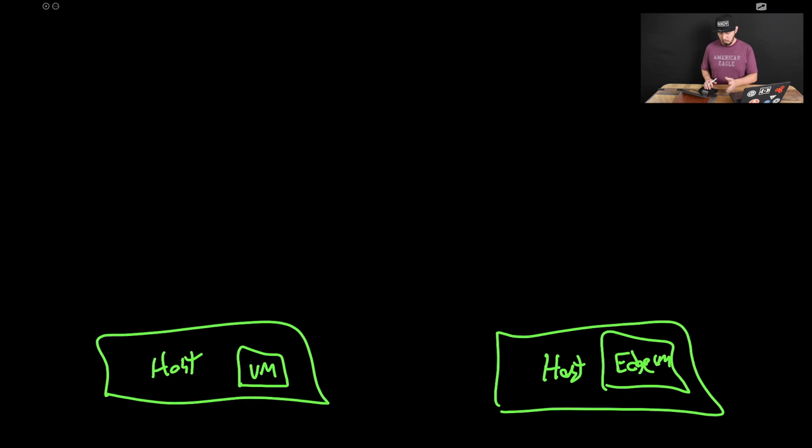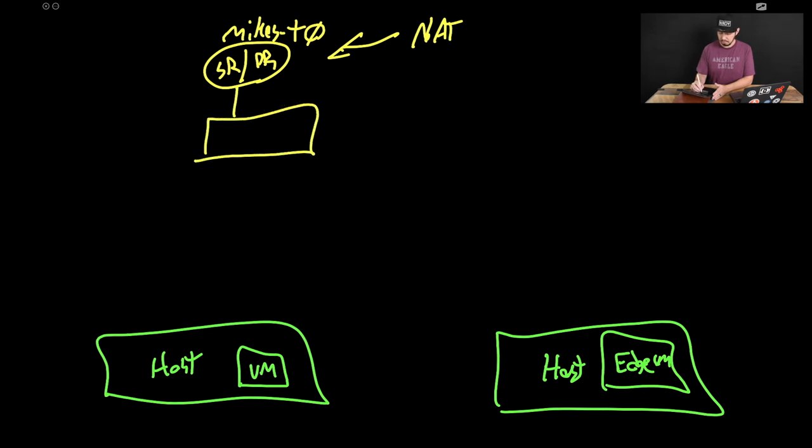Now from a network standpoint, let's say I go in here and I say, we create that Mike's T0. So we create that. And again, we have a DR component and we have an SR component. So I go into that T0 and I say, I want to enable NAT. So I enable NAT. In addition to that, I tell it I want to create a segment and I want to connect some VMs to it.